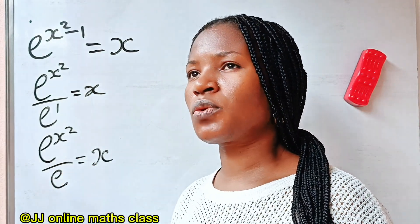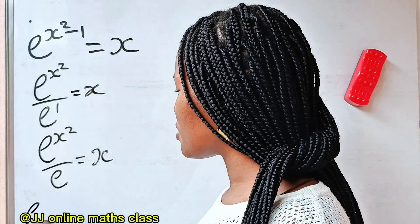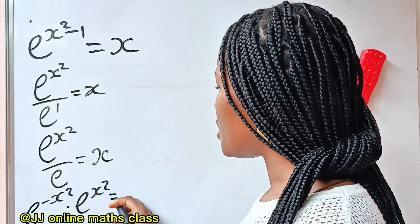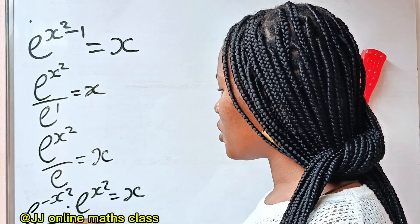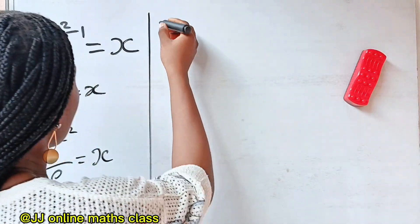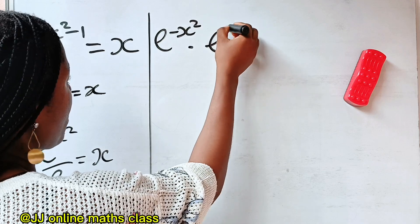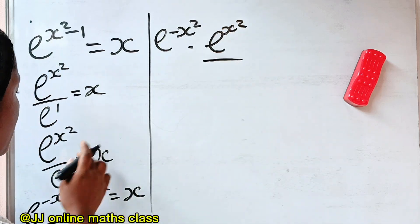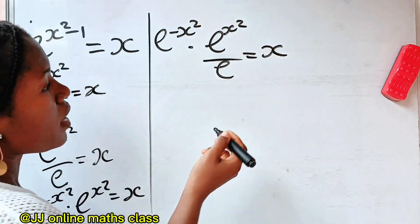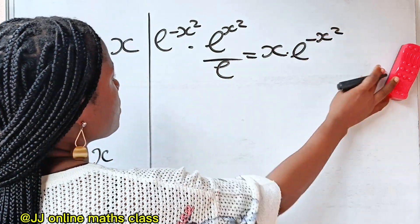So I'll multiply both sides of this equation by e to the power of minus x squared. I have e to the power of minus x squared multiplied by e to the power of x squared, divided by e, is equal to x. We must multiply this side by the same thing: x multiplied by e to the power of minus x squared.